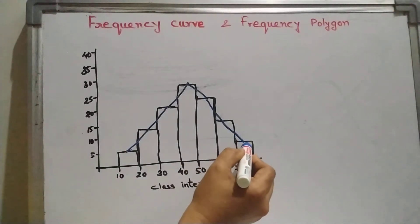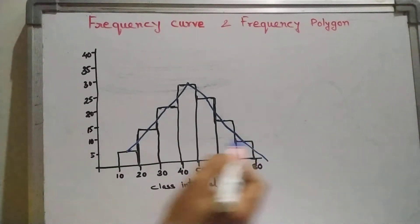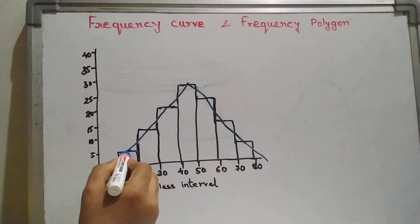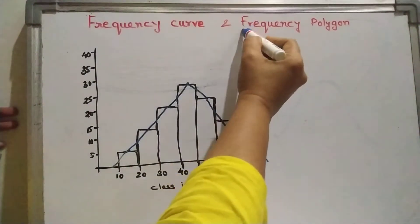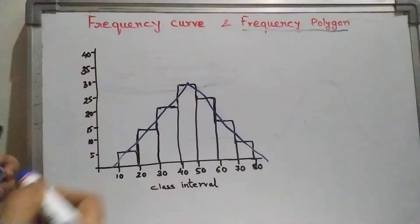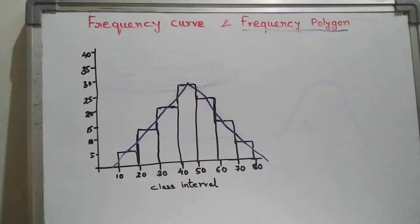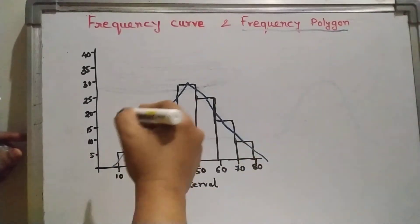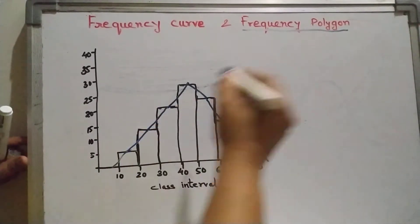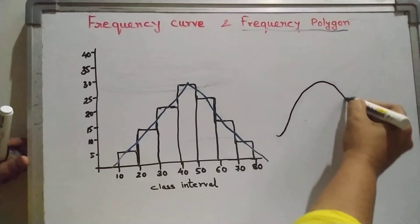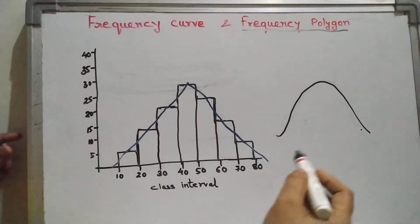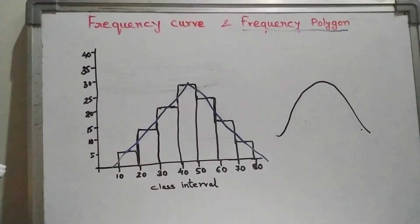You need to extend the line to the baseline on both ends. This is your frequency polygon. The same can be done smoothly — sometimes we get a smooth curve like this, and then it is called a frequency curve.